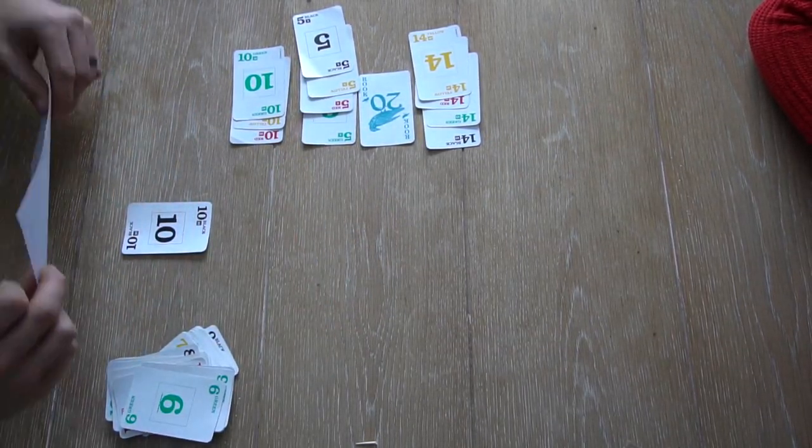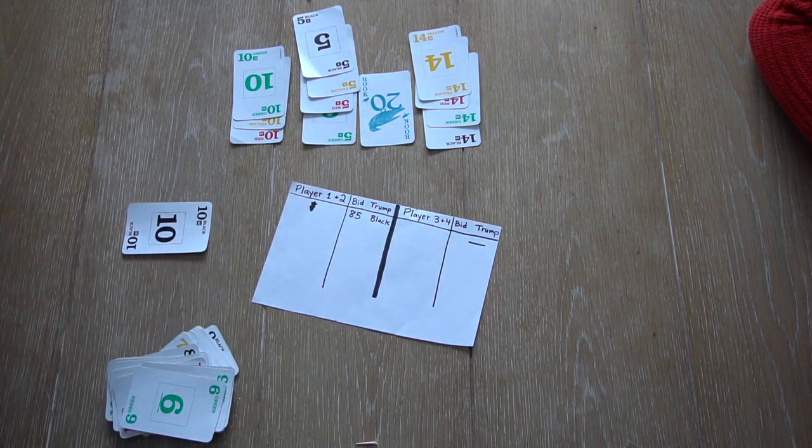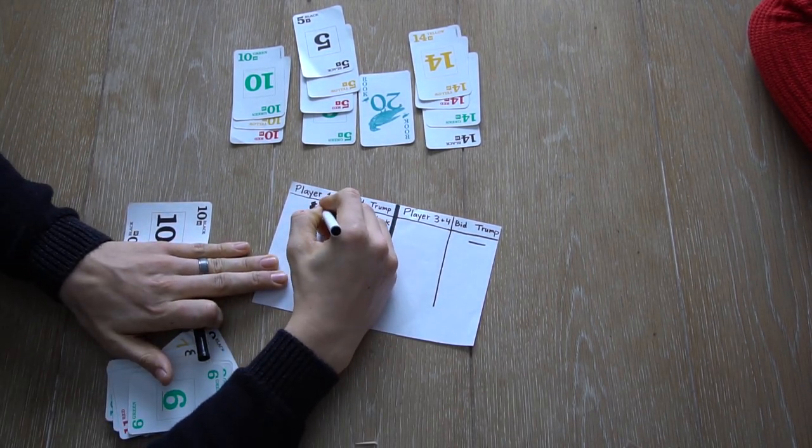So in round 1, players 3 and 4 got a total of 110 points, and the other team got 10 points.